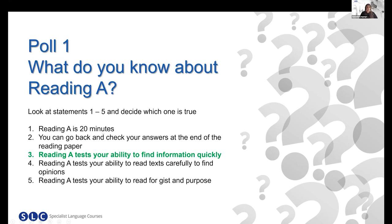Let's look at the other answers. Reading A is almost 20 minutes, but not quite — it's 15 minutes. You cannot go back and check your answers at the end of the whole reading paper; you can only check within the 15-minute time limit for Reading A. Reading A tests your ability to read text carefully to find opinions — this is not Reading A, this is Reading C. And reading for gist and purpose is more found in Reading B or perhaps C.